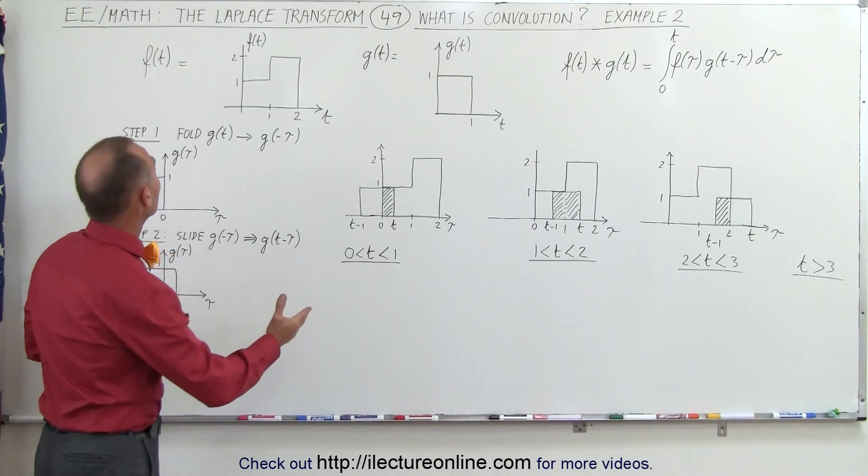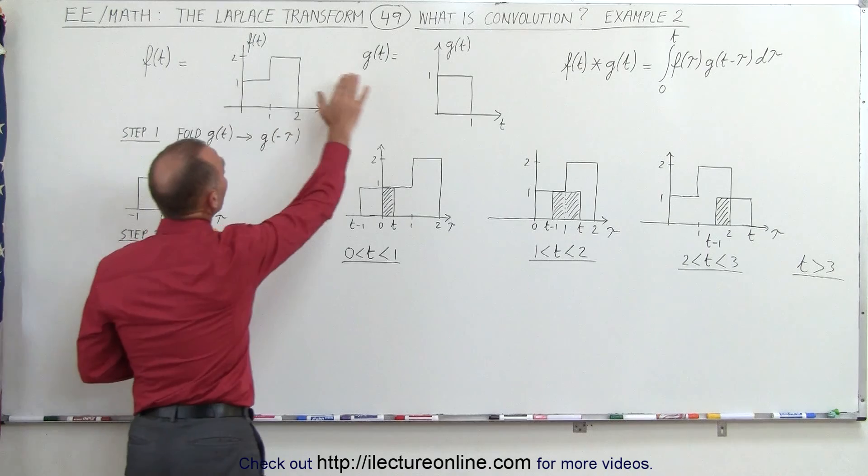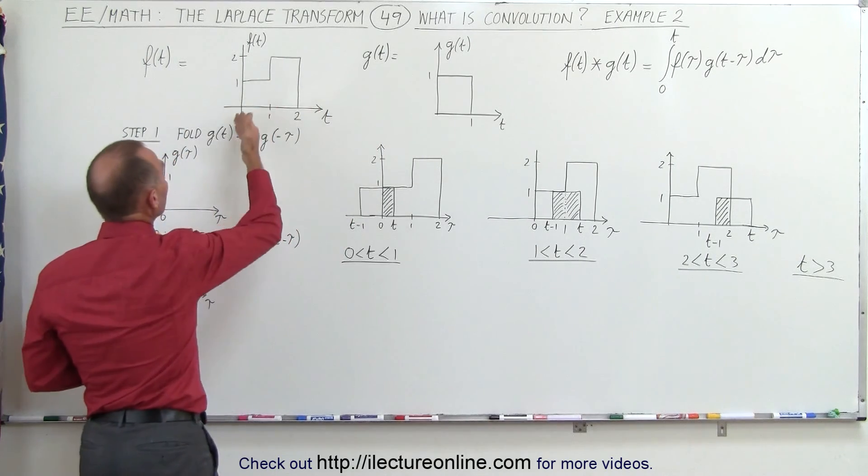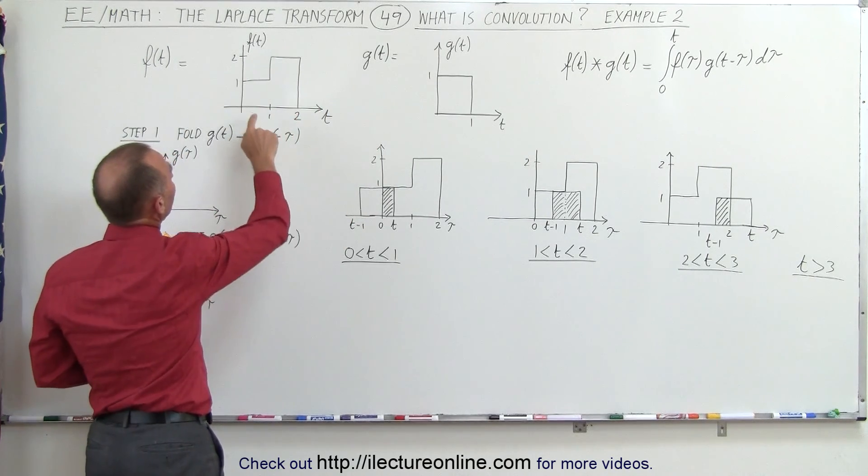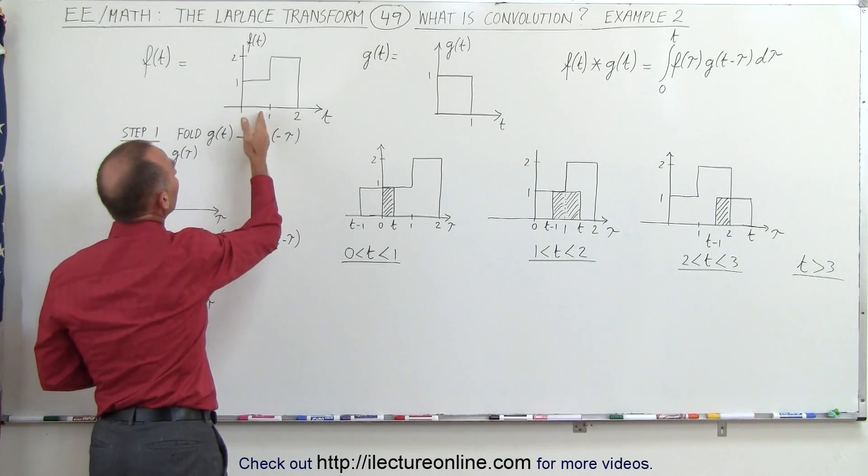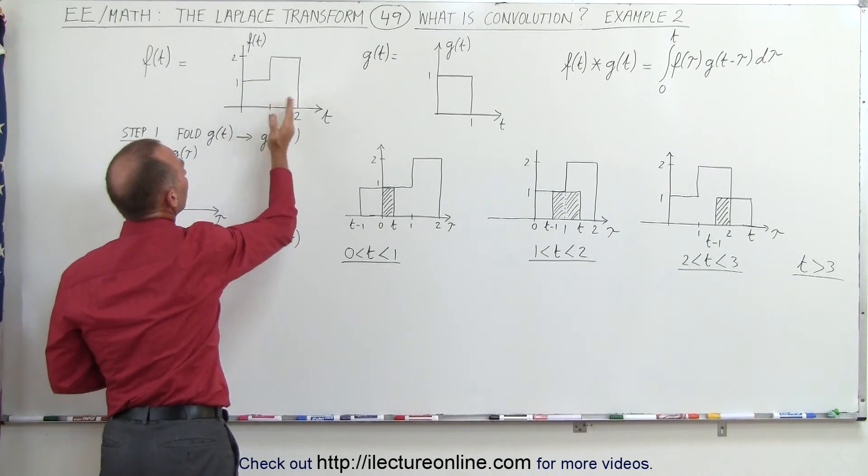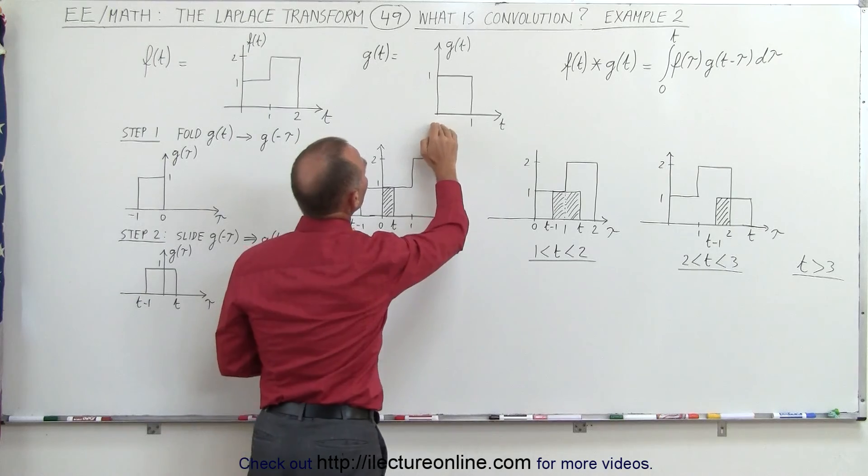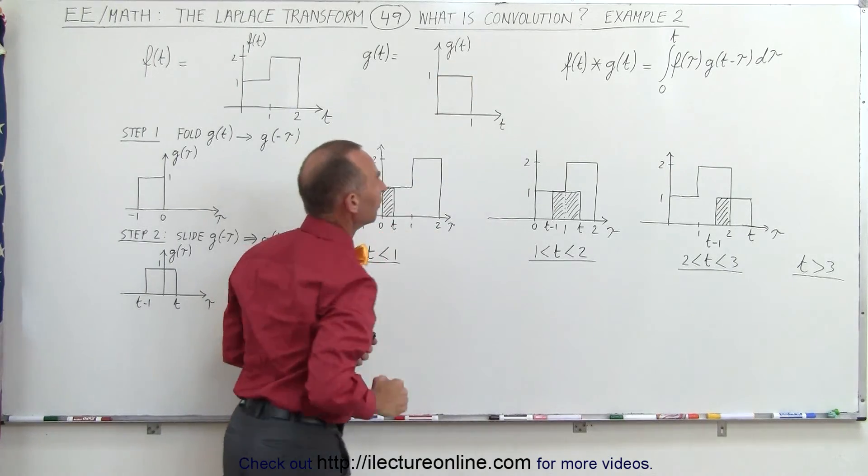Here we have two functions, f of t and g of t, and the best way to illustrate it is graphically what these functions are. f of t is equal to 1 between 0 and 1, and it's equal to 2 between 1 and 2. g of t is equal to 1 between 0 and 1.